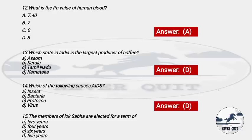Question 15: Members of Lok Sabha are elected for a term of — Options: A) 2 years, B) 4 years, C) 6 years, D) 5 years. The right answer is option D — Lok Sabha members are elected for a term of 5 years.